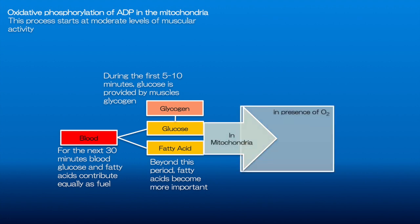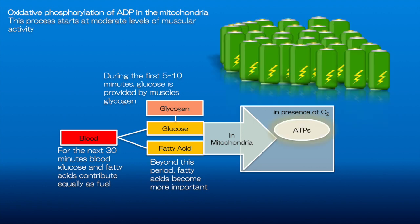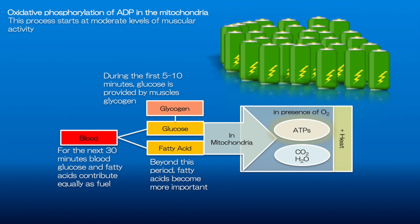Both glucose and fatty acids, in the presence of oxygen in the mitochondria, produce many ATPs. For every glucose, for example, when it enters aerobic respiration, a net total of 36 ATPs are produced. Other products in this process are water, CO2, and also generation of heat.